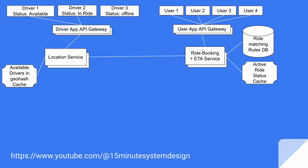The ride booking service receives the request from the user, then calls the location service to get available nearby drivers based on the user's location. It then computes ETAs on top of that and finally sends back the list of driver IDs and their locations along with the lowest ETA to the user.